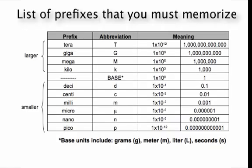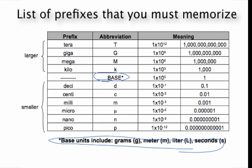Here's the list of prefixes for base units that you must memorize. You need to understand the difference between base units and prefixes. Base units include grams, meters, liters, and seconds — these are the units we use in everyday life. There are times when you need to indicate something very small or very large, and those are the times you need to use prefixes.